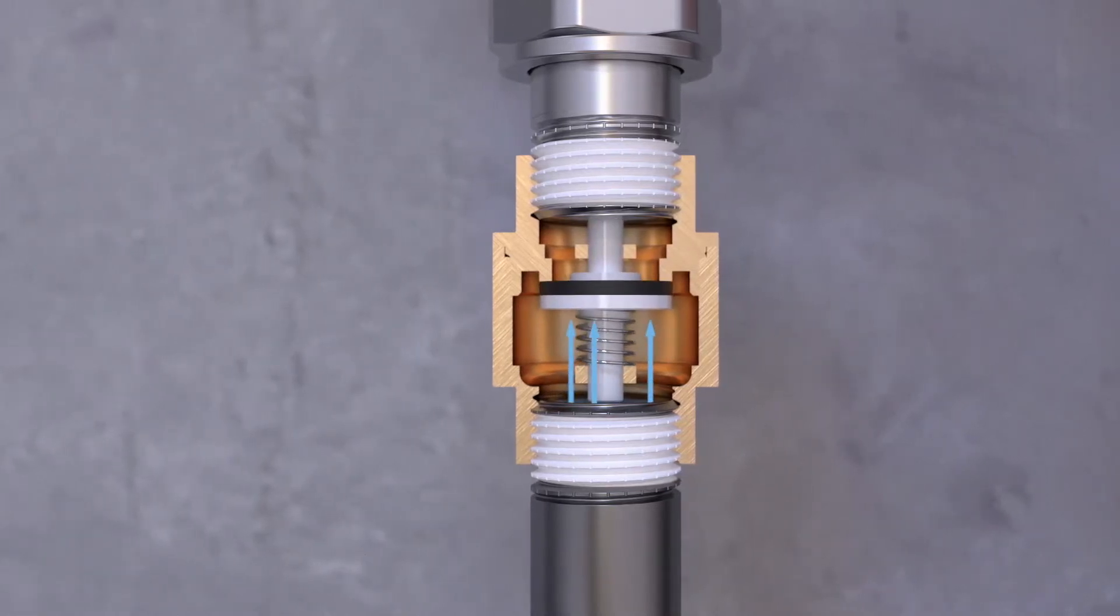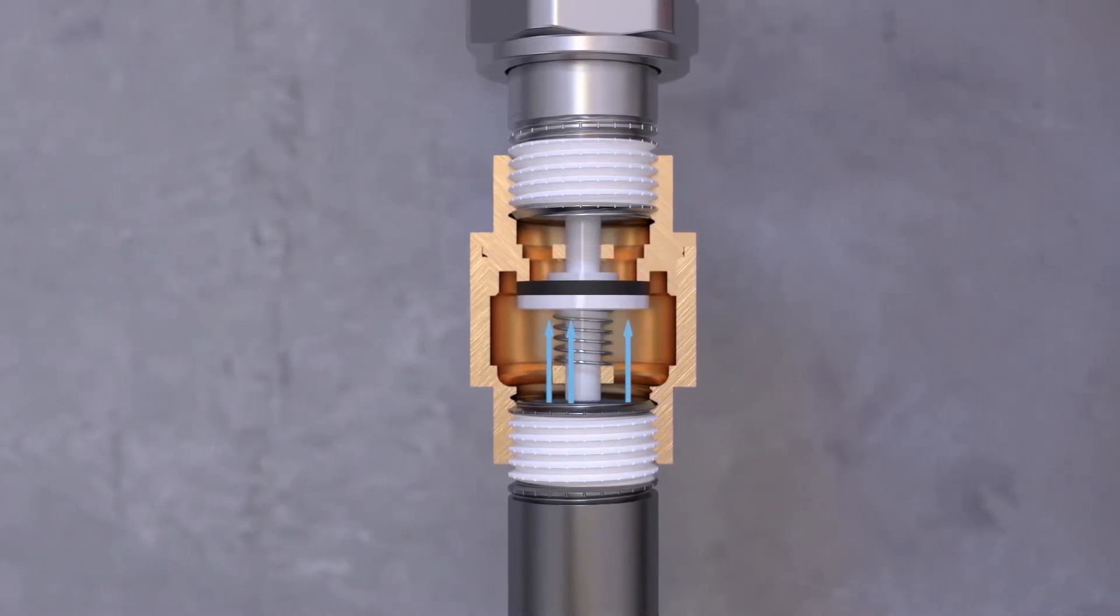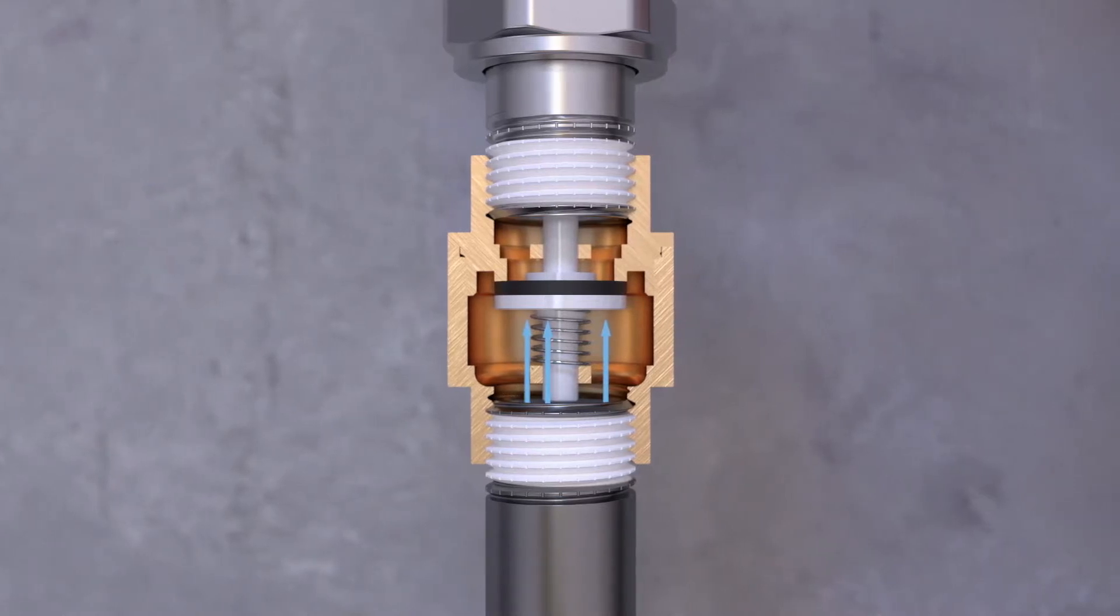Moving in the opposite direction, the sealing plate returns to its original position, blocking the water flow.